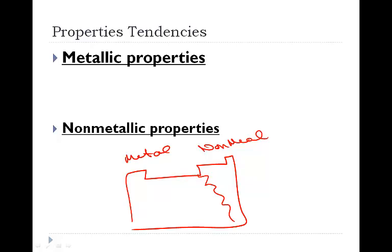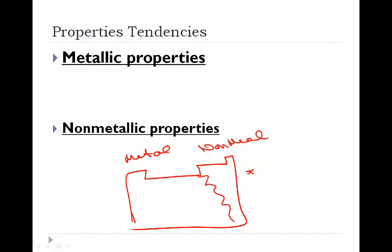Metallic properties tend to increase as we move left on the periodic table. It makes sense that elements would become more metallic as we move towards the metal side of the table. Metallic properties also increase as we move down the table. Non-metallic properties tend to increase as we move to the right and as we move up on the periodic table.